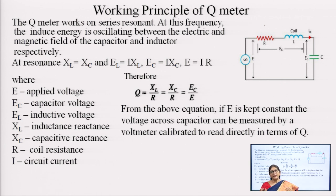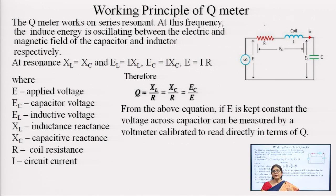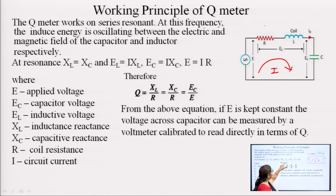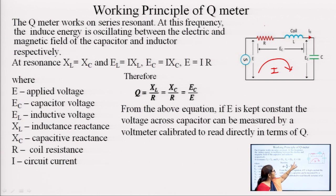When this circuit is at resonance — resonance means at the resonance frequency when XC is equal to XL, the capacitive reactance is equivalent to the inductive reactance — the circuit is said to be at resonance. At that time the voltage across the capacitor or the voltage across the inductor is very high. The maximum voltage we can get across the capacitor when the circuit is at resonance. At resonance frequency, XL = XC, and if current I flows through the circuit, then EL = I·XL and EC = I·XC.